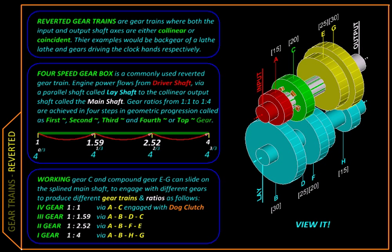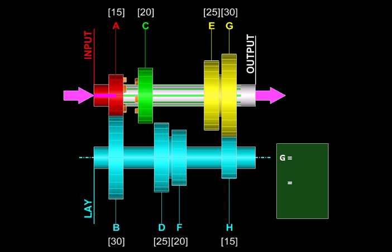The power is transmitted from input to output via a third shaft which is parallel to them both. Here is an example of a reverted gear train used in automobiles where the input shaft shown in red and the output shaft shown in grey are co-linear.